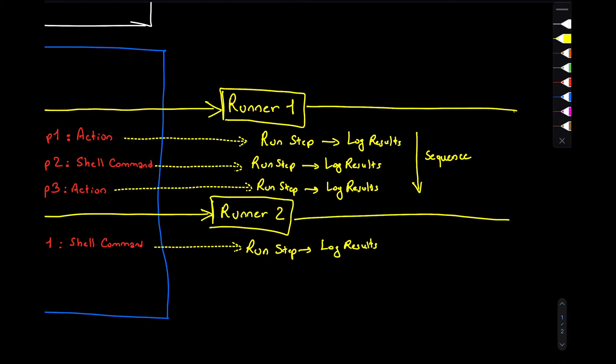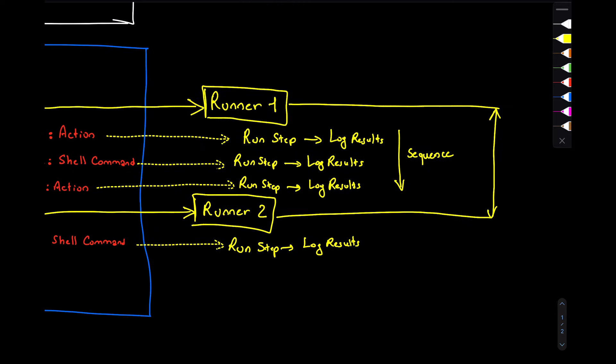However, jobs — because they consume an independent runner — can run in parallel. Of course, you can run them in sequence if you deem it necessary, but in general the default behavior is that they run in parallel.